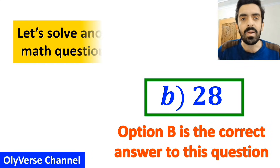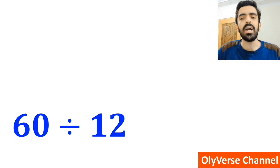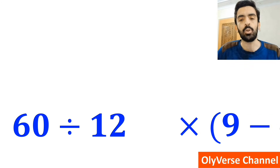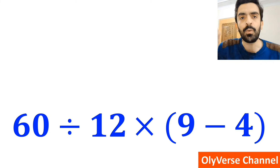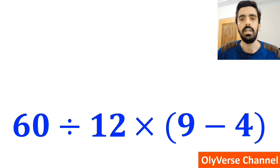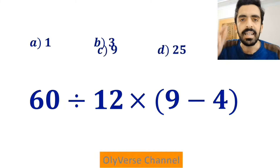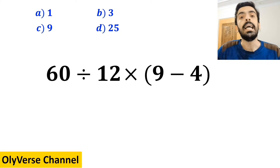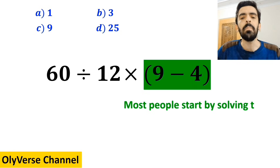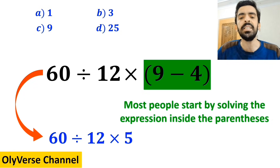Now let's solve another tricky math question together. What is the value of the expression 60 divided by 12 times open parenthesis 9 minus 4 close parenthesis? Which option do you think is the correct answer? Let's take a closer look and solve it together. In the first step, most people solve the expression in the parenthesis first and replace it with 60 divided by 12 times 5.